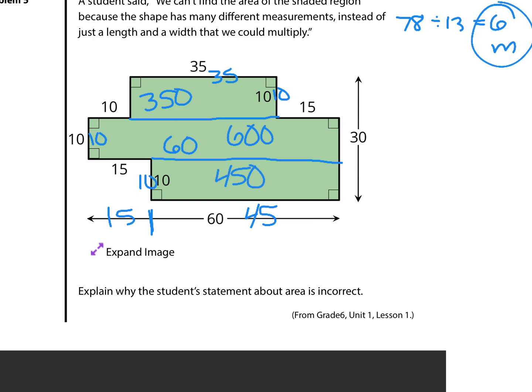And then I could add those up and get 1,400 square units. Well, solving it is certainly one way of proving why the student's statement about area is incorrect. You could also write a statement about, well, you can just break this down into three rectangles or more and find the area of the individual rectangles. Well, that is it for this Grade 6 Unit 1 Lesson 2 Practice Problems Review. Thank you. Good luck!